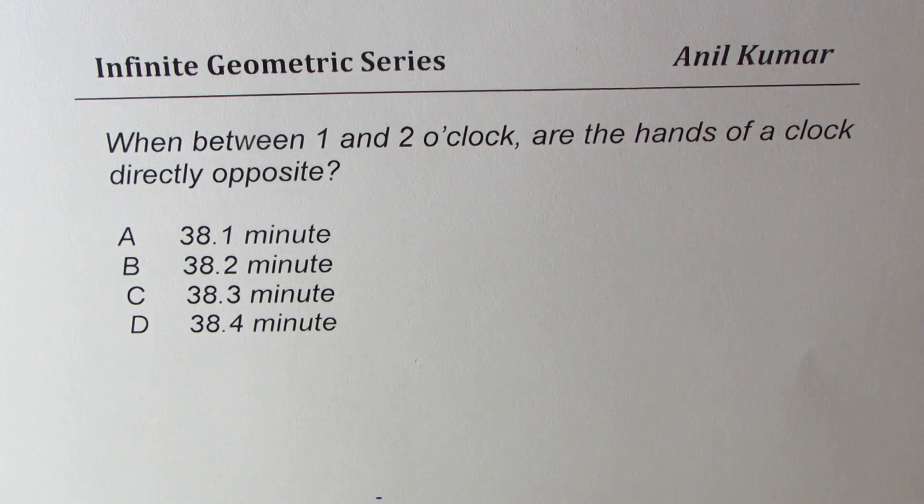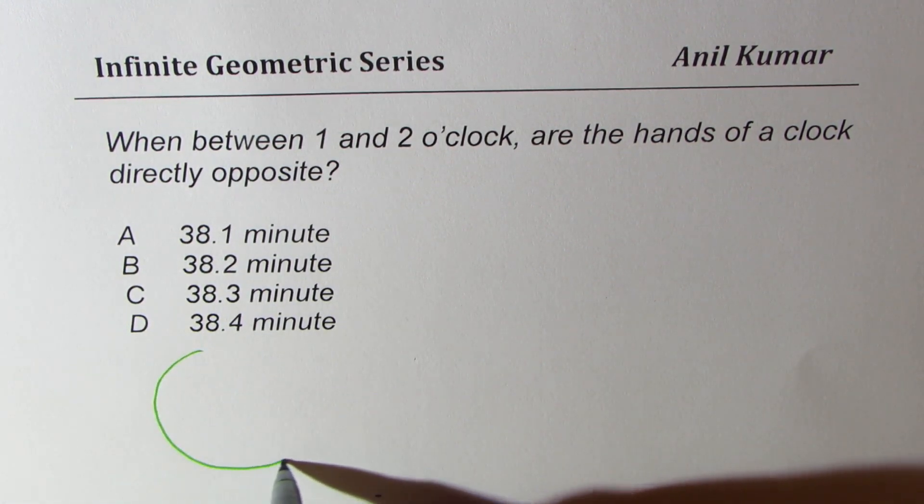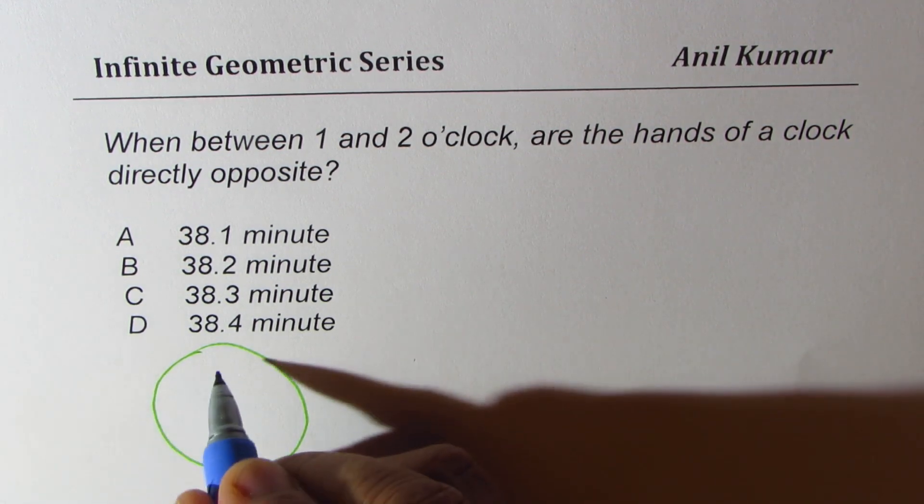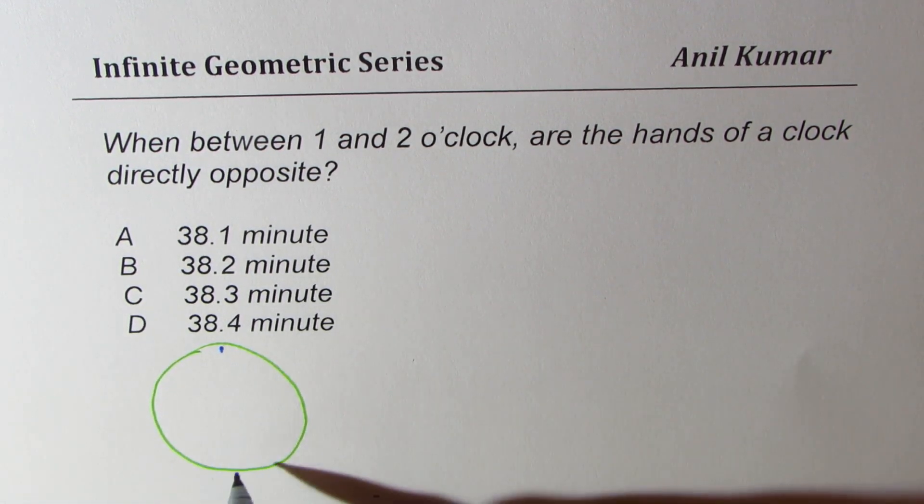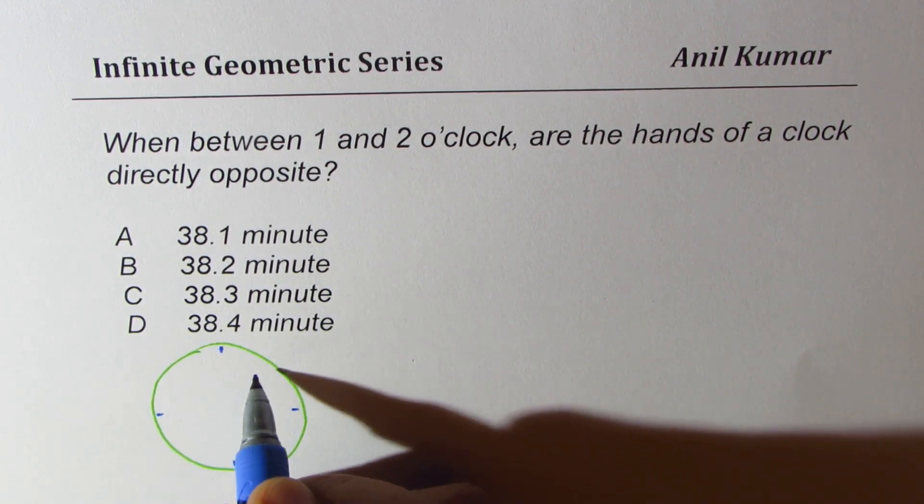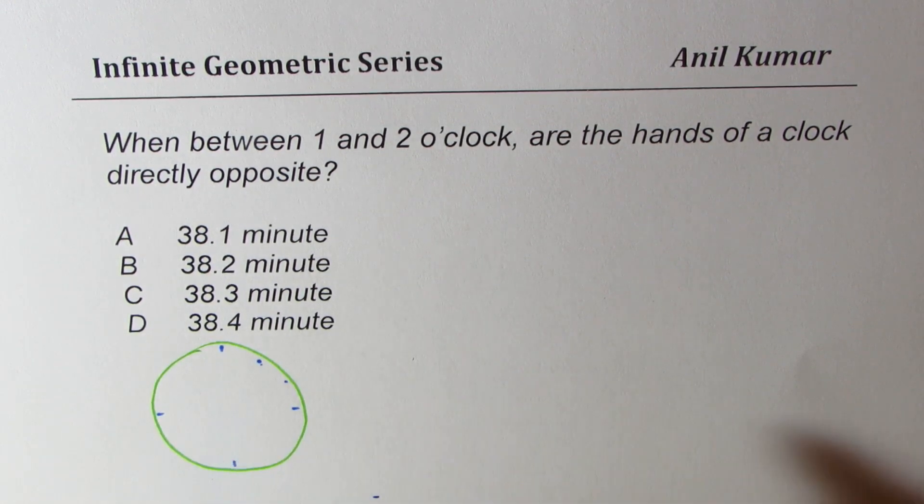Now, let's try to understand how to solve these questions. So let's look into the clock first. We are saying when between 1 and 2, so that means this is the position 12, this is 6, 9, 3, 1, and 2. So let's say these are the positions.